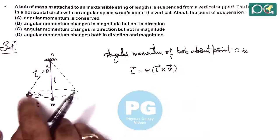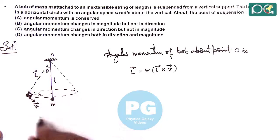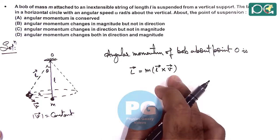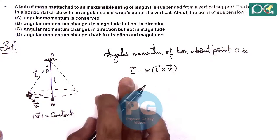Here you can see if it is moving in a horizontal circle, magnitude of velocity is constant, and L is also constant. So the numerical value is constant, this comes out to be MLV.